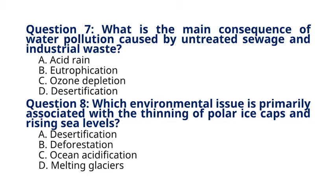Question 8. Which environmental issue is primarily associated with the thinning of polar ice caps and rising sea levels? A. Desertification. B. Deforestation. C. Ocean acidification. D. Melting glaciers. The correct answer to question 8 is option D. Melting glaciers. Explanation: the thinning of polar ice caps, particularly in the Arctic and Antarctic regions, contributes to melting glaciers and rising sea levels, posing threats to coastal communities and ecosystems.